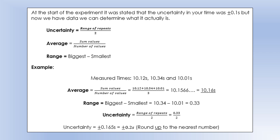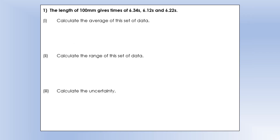When we get uncertainties, we round them up to the nearest number. So the uncertainty came out as 0.165 but we're going to round that up to 0.2 seconds. We can see that our uncertainty from this set of data is actually bigger than we would have predicted by just saying it's 0.1.